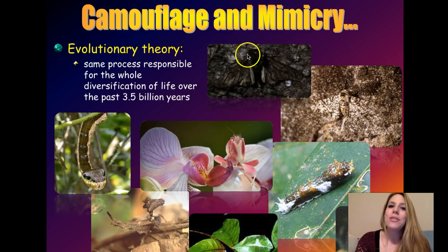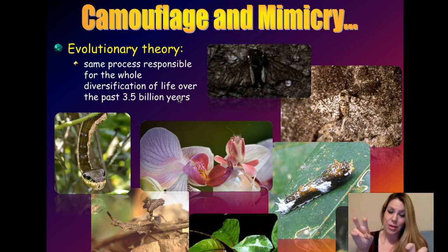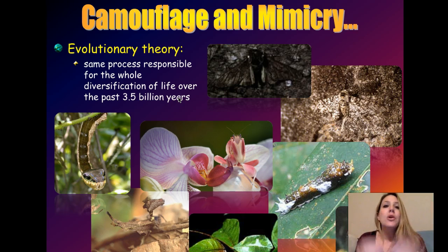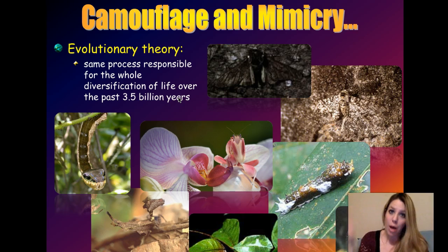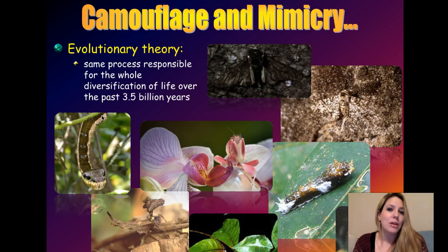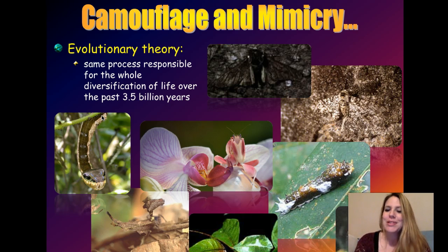Everything that we've learned goes towards what's called evolutionary theory — that the same processes that cause evolutionary change within a species can also accumulate and be responsible for change among species, and therefore the diversification of life over three and a half billion years. In other words, in the three and a half billion years that life has been around, all species have derived from a common ancestor using these microevolutionary processes.